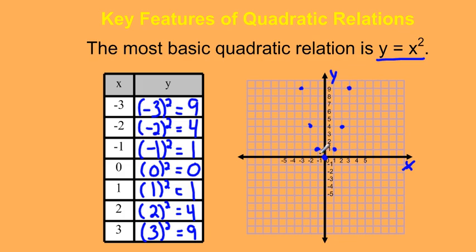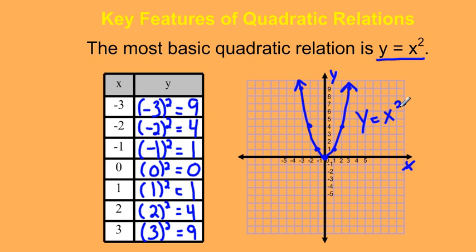When I connect these points with a smooth curve, I can see that my graph is a parabola. Graphs of quadratic relations are always parabolas. This is a very common one: y equals x squared.